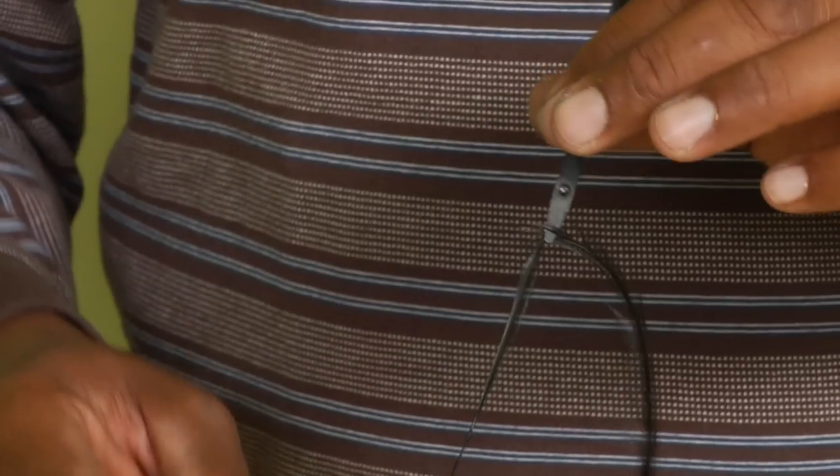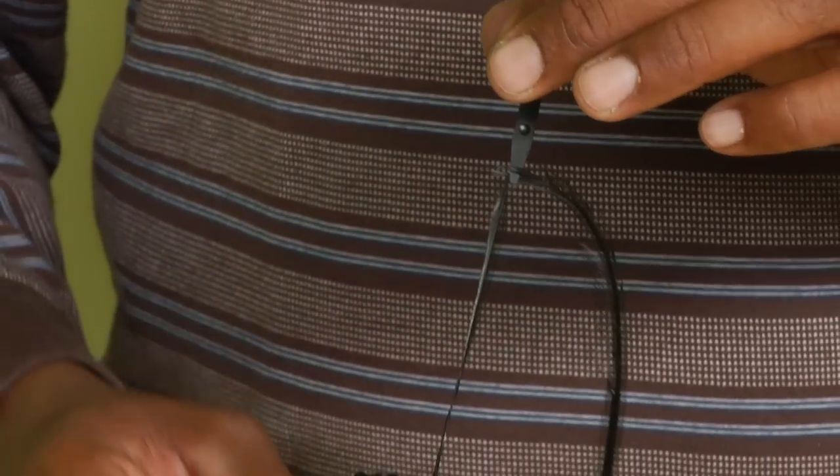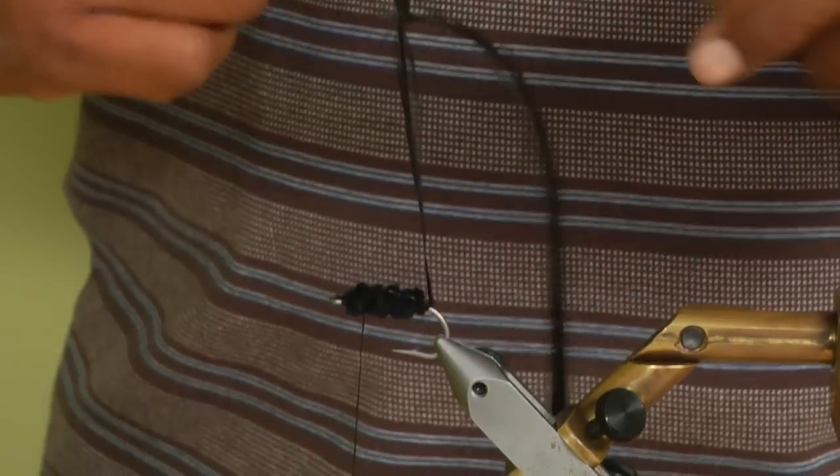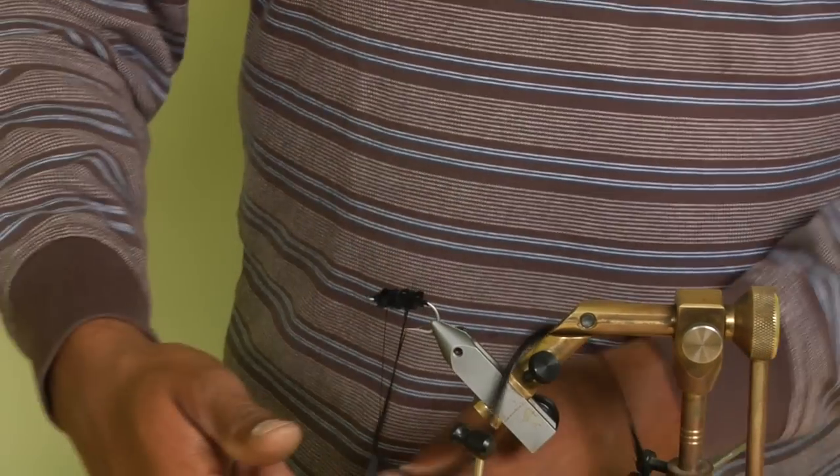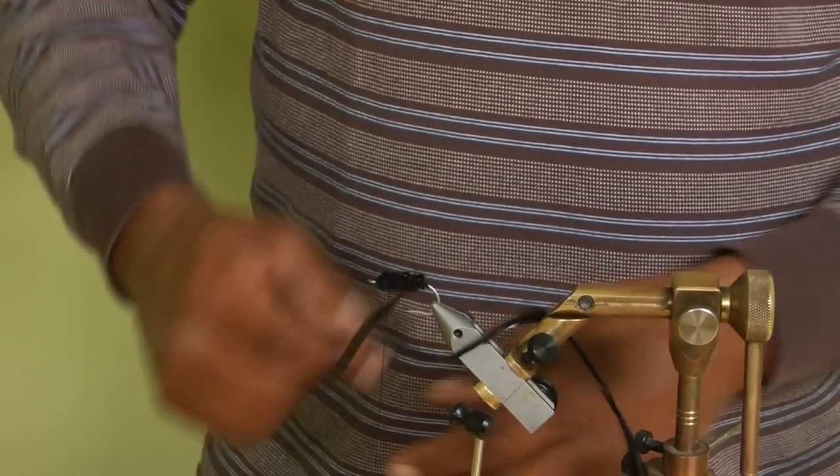and you've got a couple of options at this point. You can just do your traditional palmering. Stick your fingers in the opening on the hackle pliers and just kind of curl it around forward.